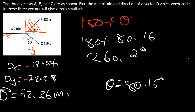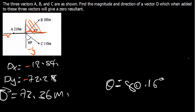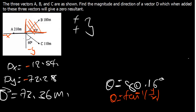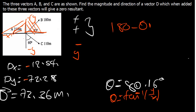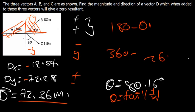Let me summarize the quadrant rules: if X is positive and Y is positive, the angle is in the first quadrant and theta is the answer directly. If X is negative and Y is positive, it's the second quadrant and the angle is 180 minus theta. Third quadrant (both negative): 180 plus theta. Fourth quadrant (X positive, Y negative): 360 minus theta. In this case, the answer is D equals 73.36 meters at an angle of 260.2 degrees.